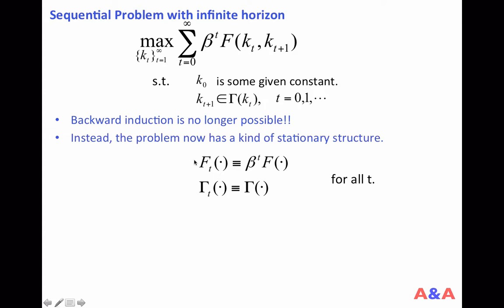In particular, suppose the period return function can be expressed as some discount factor beta to the power T times a common function F. Suppose also that the constraint correspondence is always the same correspondence gamma. That is, nothing depends on the calendar time T except for the exponent to the discount factor.